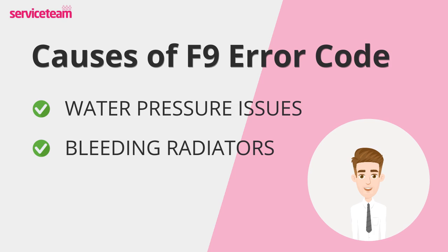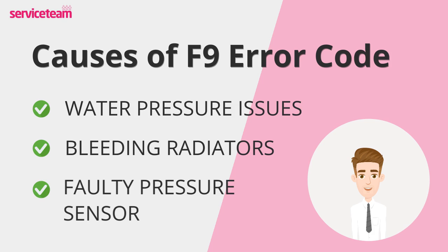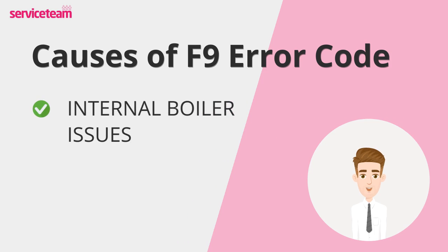If you notice a drop in pressure after bleeding, re-pressurizing your system can help resolve the issue. Over time, the pressure sensor in your boiler may wear out or become faulty, giving incorrect readings. Loose or corroded electrical connections to the sensor can also affect its performance. Other internal components, like the PCB (printed circuit board), can also indirectly cause the F9 fault code.